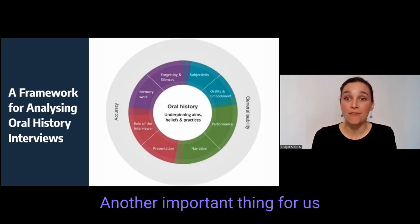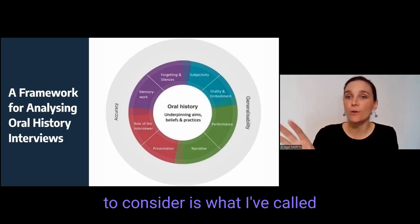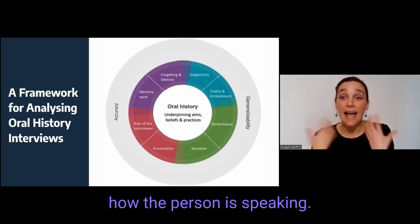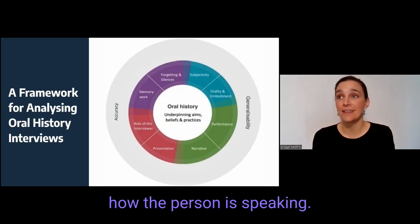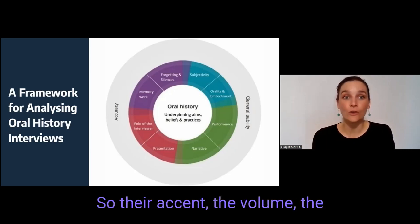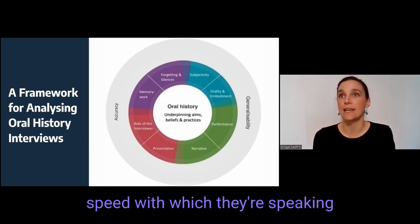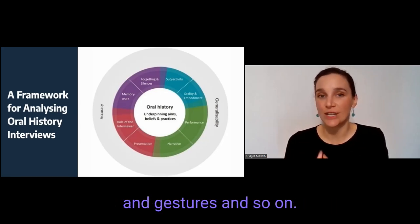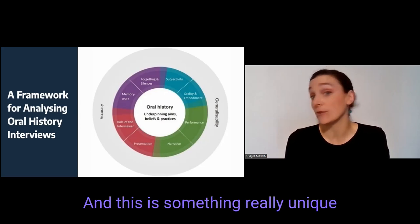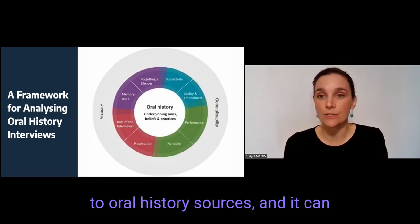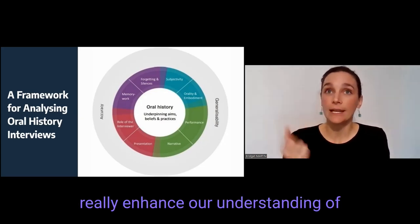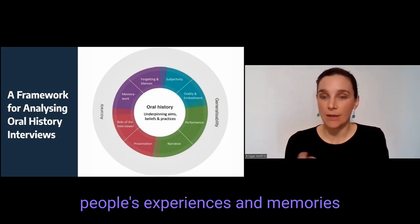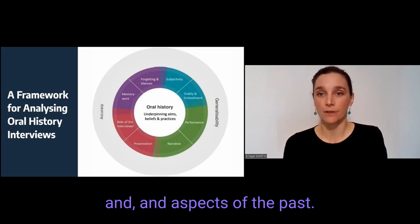Another important thing to consider is what I've called here orality and embodiment, which essentially means how the person is speaking — so their accent, the volume, the speed with which they're speaking — and also their physicality, so their facial expressions and gestures and so on. This is something really unique to oral history sources, and it can really enhance our understanding of people's experiences, memories, and aspects of the past.